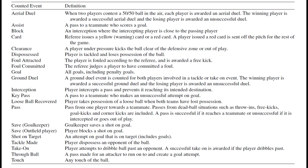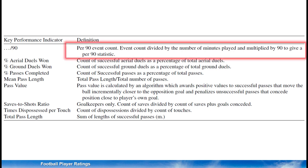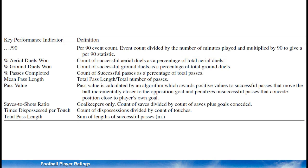This is a list of the events that we count for each player. You may pause the video here or come back to this part if you want to check any definitions later. Based on the raw counts we derive some key performance indicators, typically by adjusting the counts to become per 90 minutes. There are also some others, as listed here, calculated in different ways, such as calculating relative values.